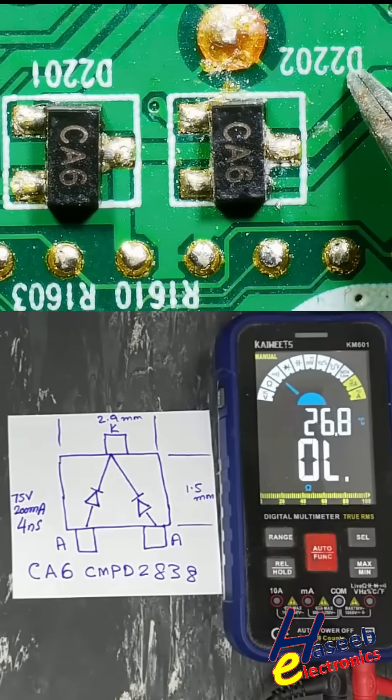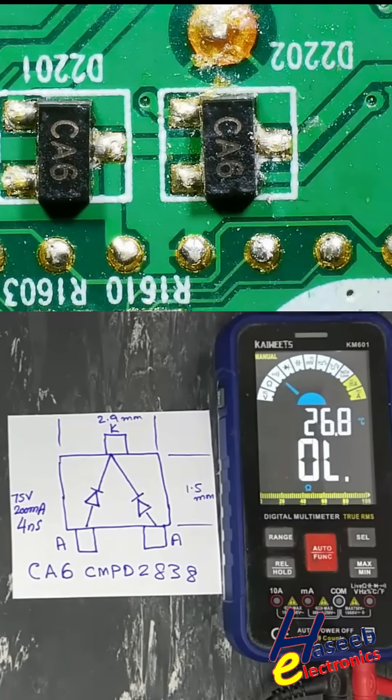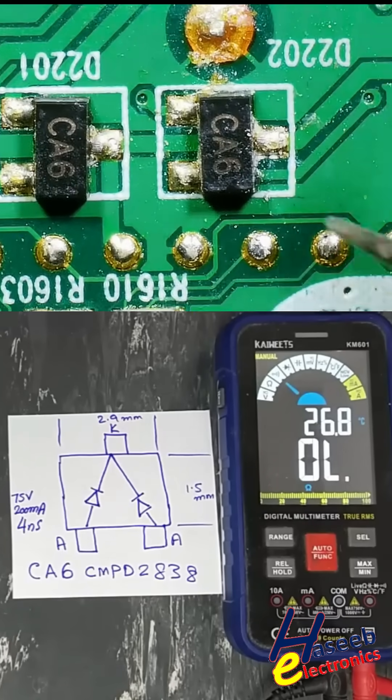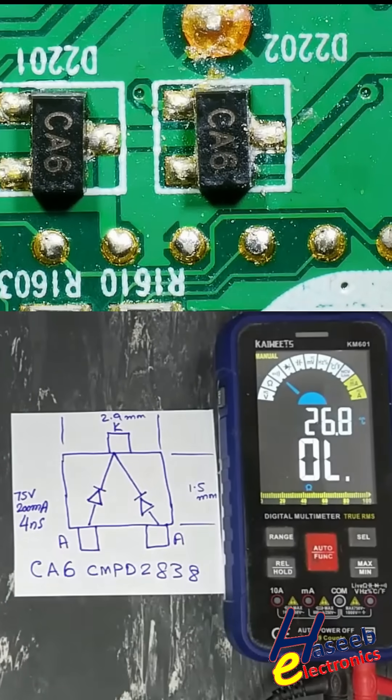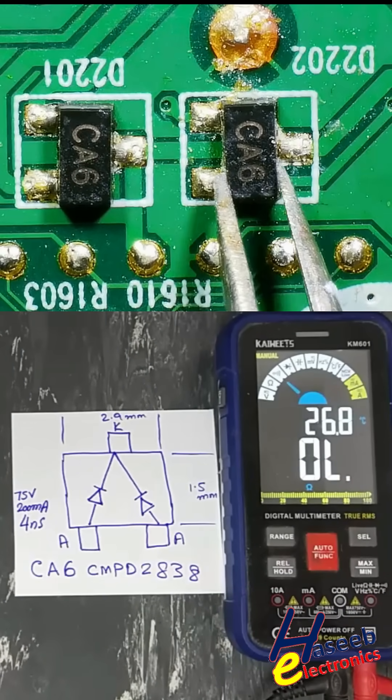This SMD component ID D means diode, CA6 marking code, length 2.9 millimeter, width 1.5 millimeter. It is SOT23 package.